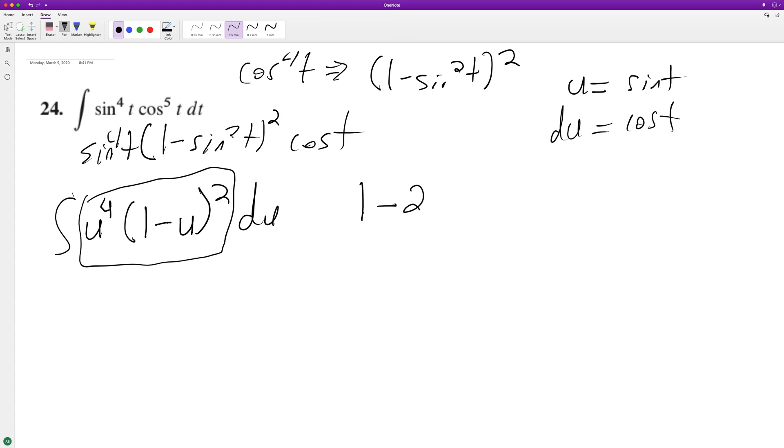So what I can do now is with this whole thing, so multiply this out, so I get one minus two u plus u to the second, and then distribute the u to the fourth, u to the fourth. And this should be u squared, I made a mistake, two u squared, u to the fourth, and then distribute the fourth.